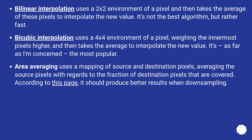Bicubic interpolation uses a 4x4 environment of a pixel, weighing the innermost pixels higher, and then takes the average to interpolate the new value. It's, as far as I'm concerned, the most popular. Area averaging uses a mapping of source and destination pixels, averaging the source pixels with regards to the fraction of destination pixels that are covered. According to one source, it should produce better results when downsampling.